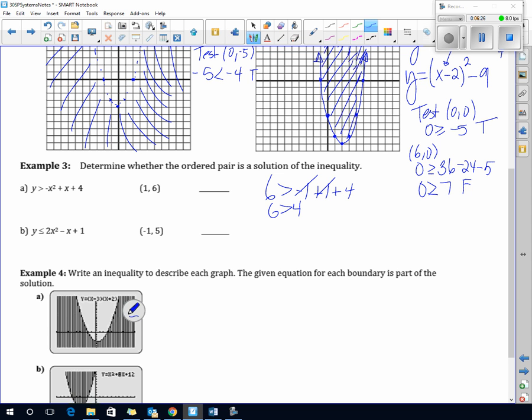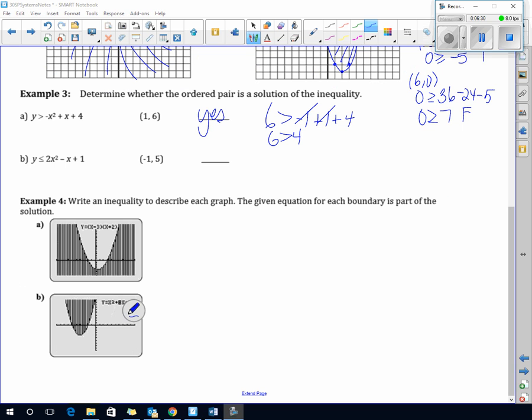I'll give you a second to do B. So, 5 is less than or equal to 2 times negative 1 squared minus negative 1 plus 1. So, this is 2 plus 1 plus 1. So, did you get 5 is less than or equal to 4? So, that means no.